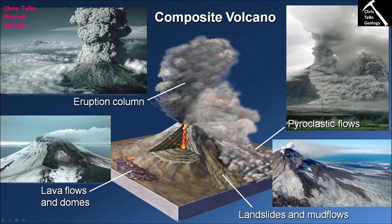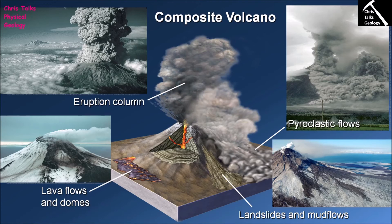Mud flows are also common with composite volcanoes. Fine dust and ash from the eruption column encourage the nucleation of water droplets, building up rain clouds that can produce very large, powerful thunderstorms. Combined with the large amounts of loosely consolidated pyroclastic material on the volcano's sides, the rainwater and fine material mix together to create mud flows. These mud flows fly down the sides of the volcano at very high speeds and are extremely dangerous.